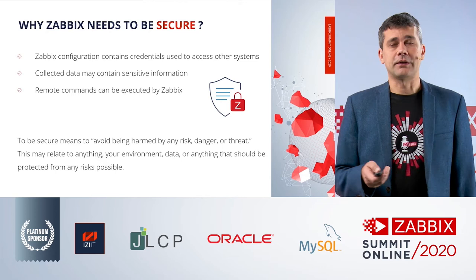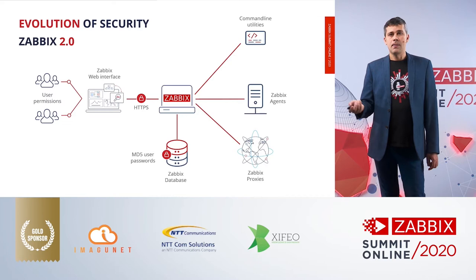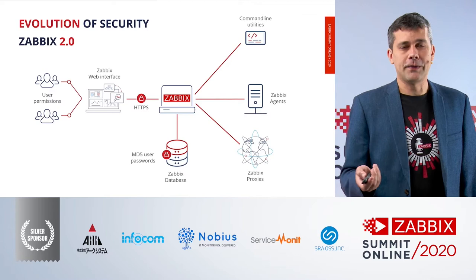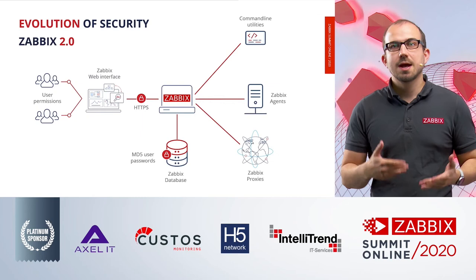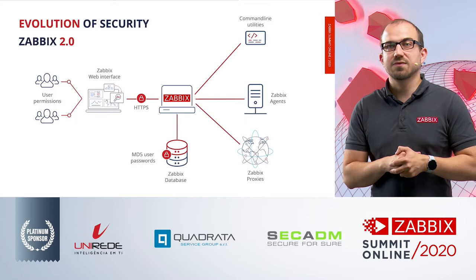Before we start, let's look back into history. Starting with Zabbix 2.0, which was a very nice innovative monitoring solution, but not a very secure one. In Zabbix 2.0, you could only encrypt the connection to the frontend, and keep passwords safe in the database by hashing them. All other components at that time did not have encrypted connections.